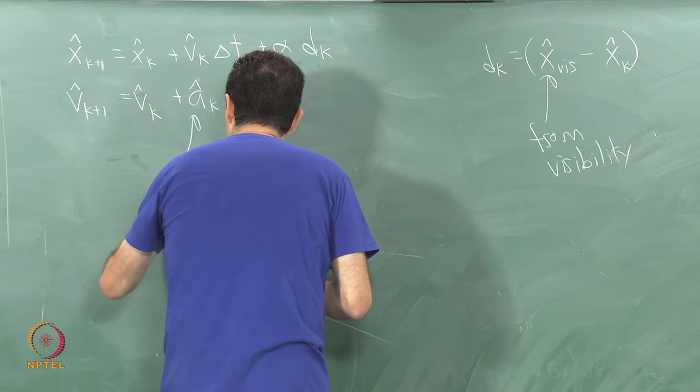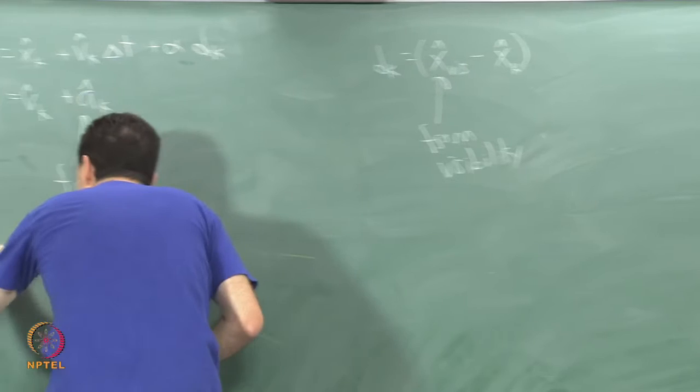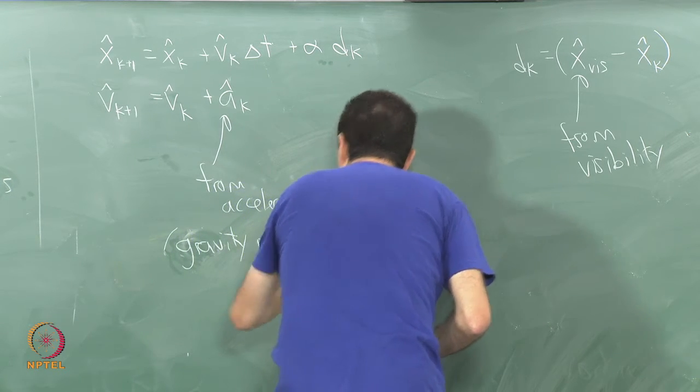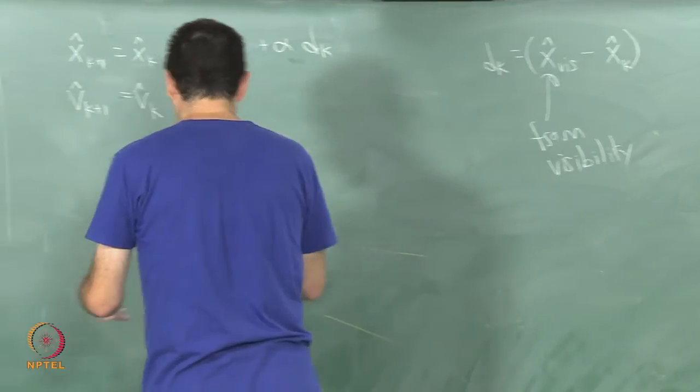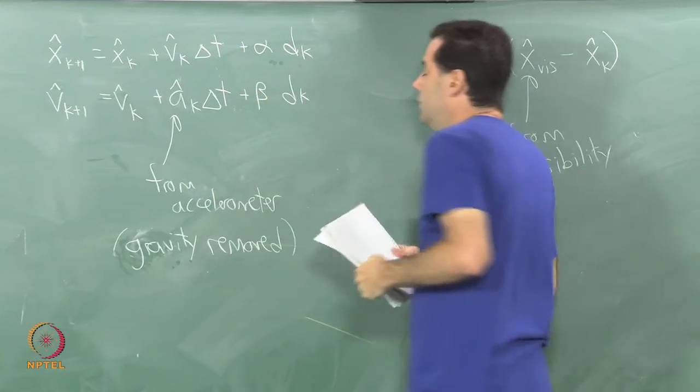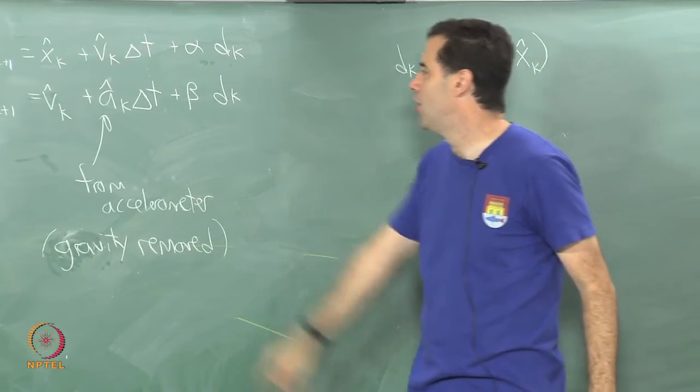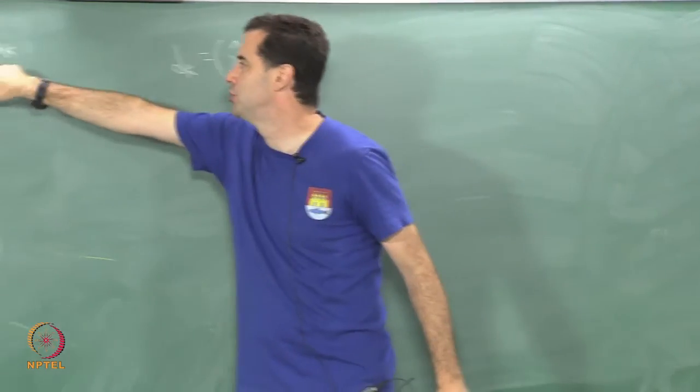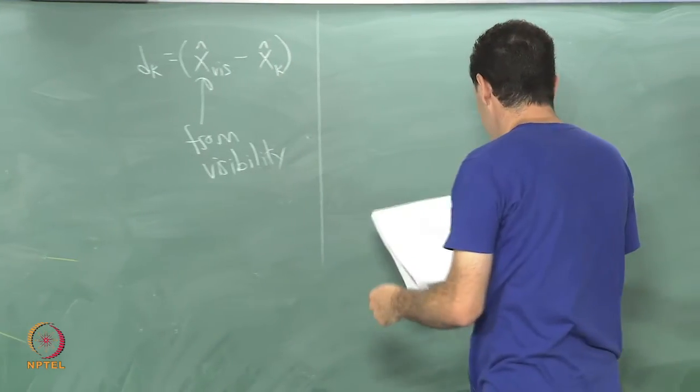We have v k plus the accelerometer measurement here, this is from and it is just the linear acceleration component with gravity removed, with more detail that would be the acceleration component due to gravity is removed, delta t plus and then another coefficient times this d k. We just make this very simple filter that is updating and estimating position and velocity based on the accelerations and then it tends to drift, but the drift is corrected by this signal which is using visibility information. There is some amount of correction here using these alpha and beta parameters, if you tune these empirically.